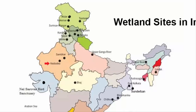In Rajasthan, we have Keoladeo National Park and Sambhar Lake. In Gujarat, we have Nalsarovar Bird Sanctuary. In Madhya Pradesh, we have Bhoj Wetland. In Uttar Pradesh, the wetlands are near the Upper Ganga River, which is basically the Brijghat to Narora stretch.